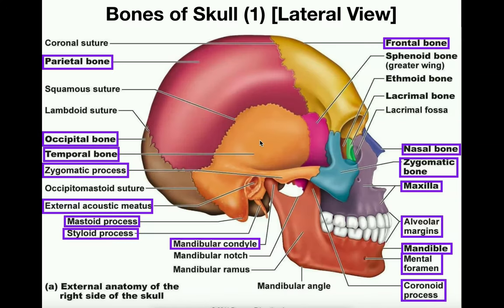This is a lateral view of the skull — specifically the right side. When you're asked to identify things on a practical, it's important to consider lefts and rights. A lot of the bones here, or pieces of the bones, are going to have a left and a right — not all of them, but most. All of the bones boxed in purple are the ones that will be important for our class.